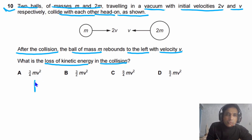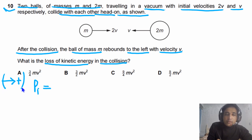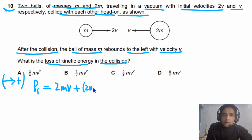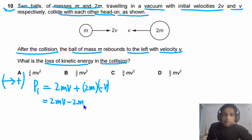To answer this problem, we need to understand conservation of momentum. The initial momentum PI — taking to the right as positive since momentum is a vector — is: m times 2v for the first ball, plus 2m times negative v for the second ball moving left. This gives 2mv minus 2mv, so initial momentum equals zero.